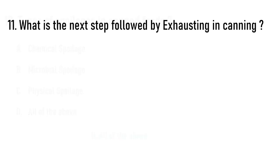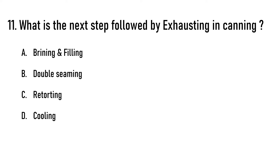Next question: What is the next step followed by exhausting in canning? Options are: A) brining and filling, B) double seaming, C) retorting, D) cooling. The correct answer is option B, double seaming.